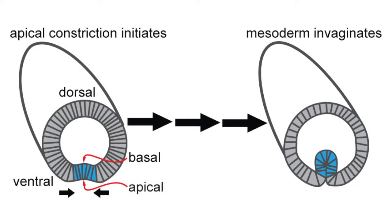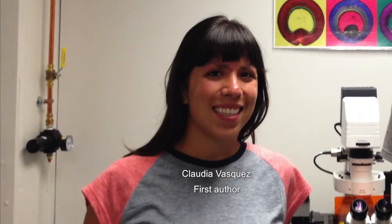Early in Drosophila embryogenesis, a strip of epithelial cells along the ventral midline constrict their apical surfaces so that they collectively invaginate to form a ventral furrow. This apical constriction is driven by pulsatile contractions of the motor protein myosin-2, as Claudia Vasquez, a student in Adam Martin's laboratory at MIT, explains.